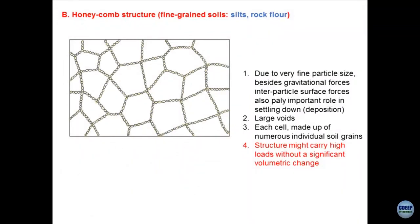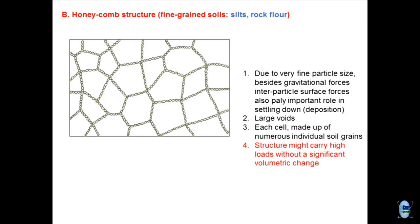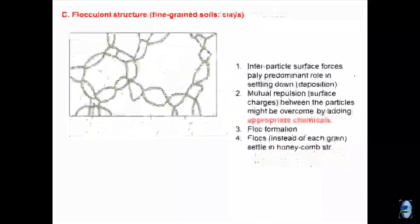Honeycomb structures are very good as far as load bearing is concerned. If I take out a sample, put it under a microscope, and establish that this is honeycomb structure, I should not be very bothered because this type of structure acts as a reinforcement. The load bearing is very good and hence volumetric deformations are not going to be much.